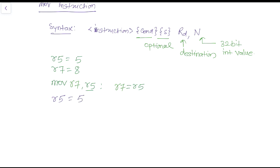After executing this instruction, r5 remains unchanged, but r7 will be changed and loaded with the same value as r5 — which is 5. This is a simple example of the Move instruction. Remember: instruction, then optional condition, then the suffix S. The suffix S is mostly used together with the barrel shifter.